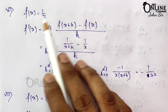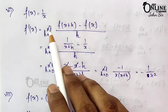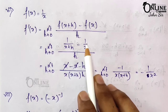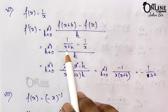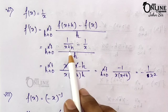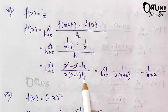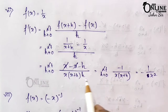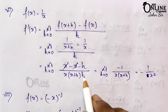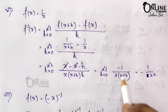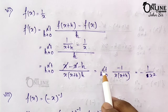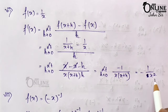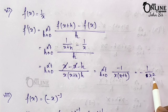Sum number 7: f(x) = 1/x. So f'(x) = limit h→0 of [1/(x+h) - 1/x] / h. Taking LCM as x(x+h): [x - (x+h)] / [x(x+h)·h] = -h / [x(x+h)·h]. After h cancels: -1 / [x(x+h)]. Substituting h→0: f'(x) = -1/x².